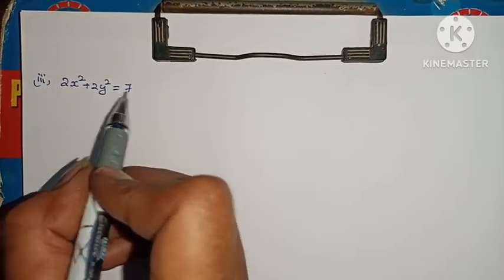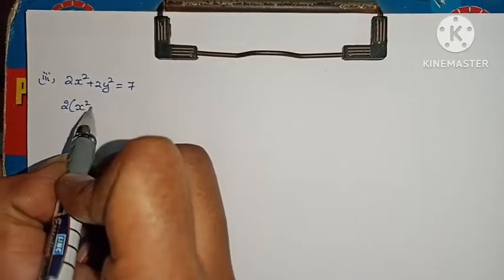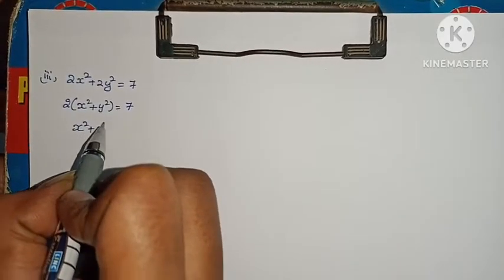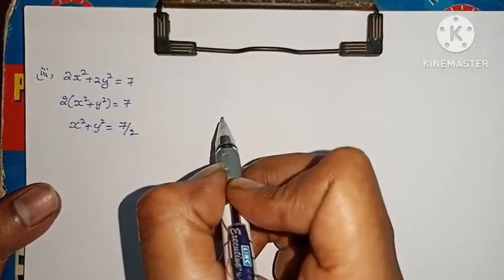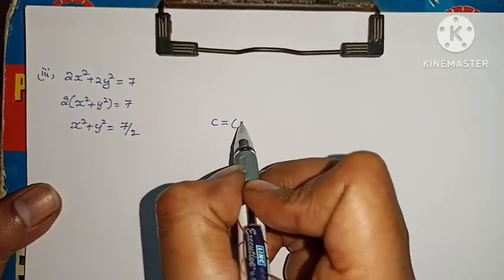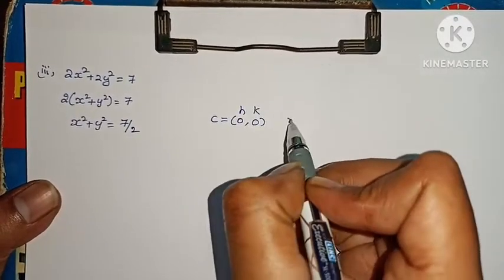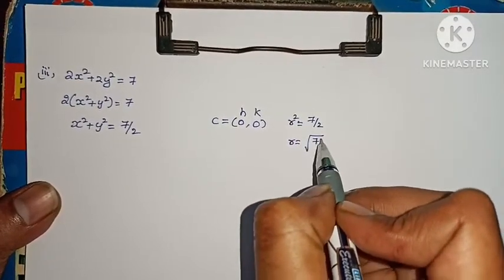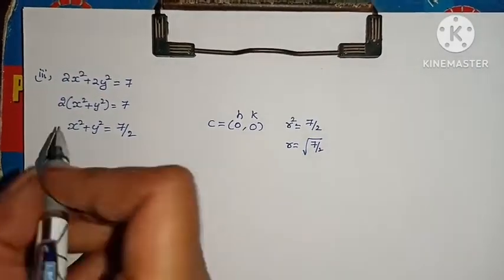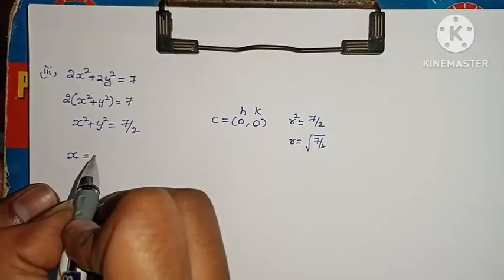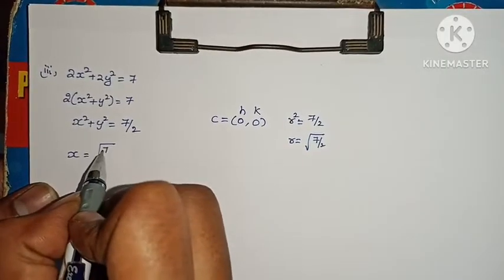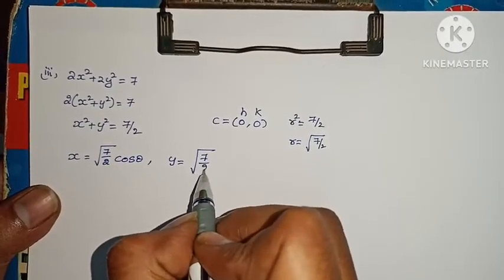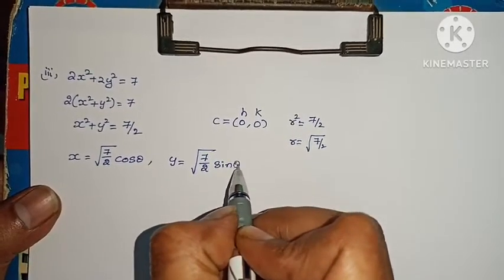For 2x squared plus 2y squared equals 7, divide by 2 to get x squared plus y squared equals 7 by 2. Center is (0,0), r squared equals 7 by 2, so r equals root of 7 by 2. Therefore x equals root(7/2) cos theta, and y equals root(7/2) sin theta.